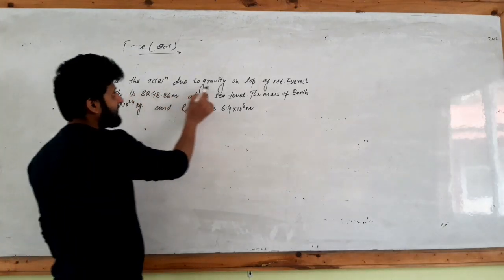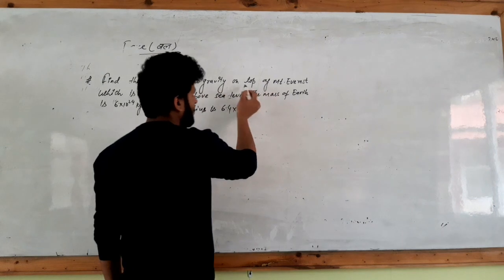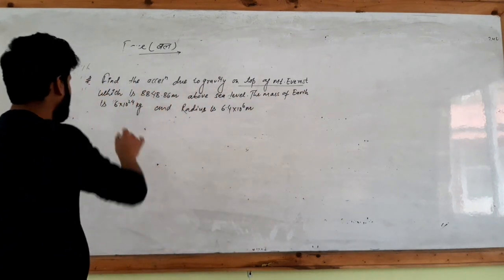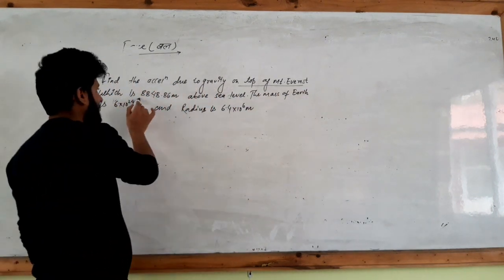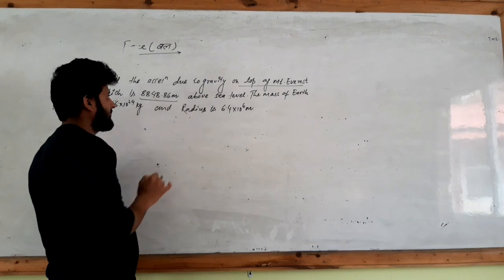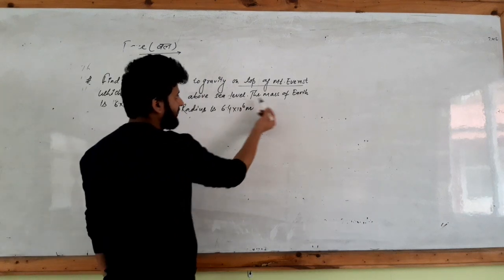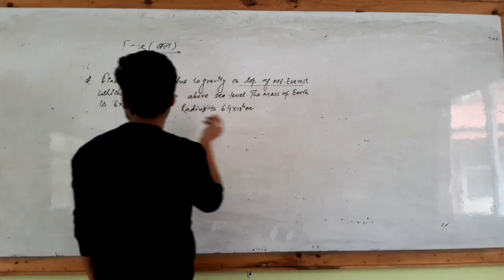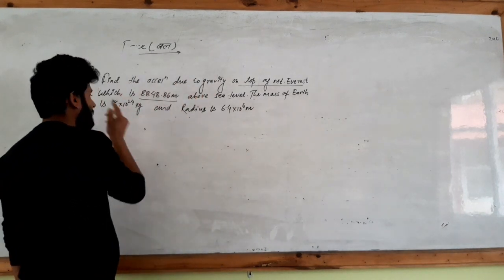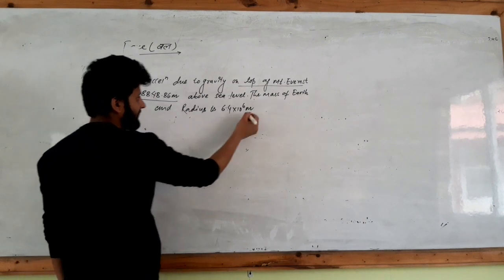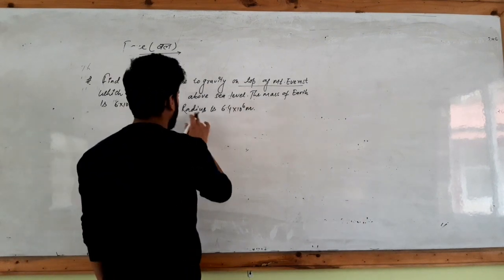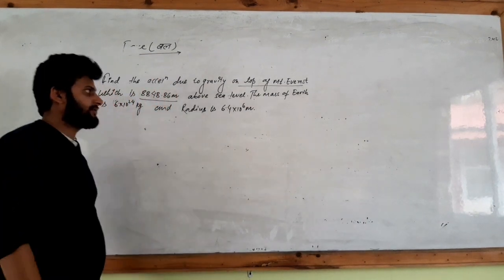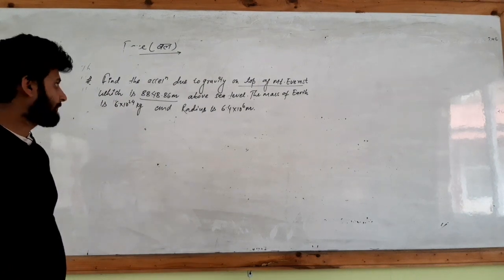Find the acceleration due to gravity on the top of Mount Everest, which is 8848.6 meters above the sea level. The mass of Earth is 6 into 10 to the power 24 kg and the radius is 6.4 into 10 to the power 6 meters.